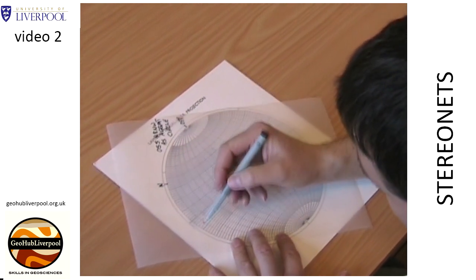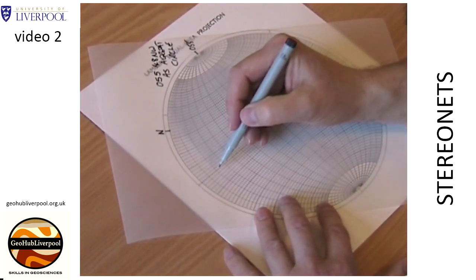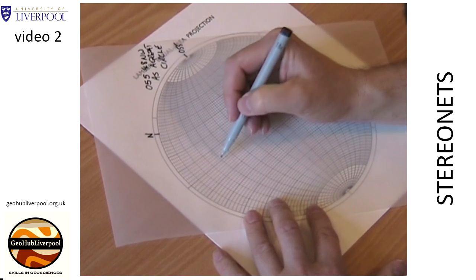Again, remember the subdivisions between the heavy lines are at 2 degrees, so it's 10, 20, 30, 40, and then four of the subdivisions to read 48 degrees.